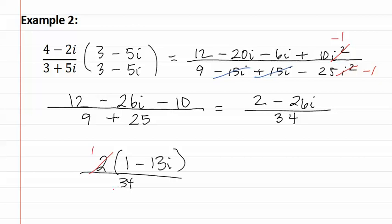We can now reduce. Two goes into two once and into thirty-four seventeen times, so we get our answer of one minus thirteen i over seventeen.